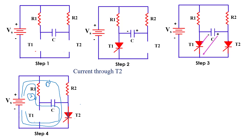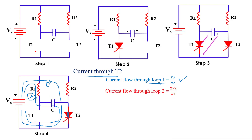Initially the total current through T2 is: from loop 1, Vs/R2; plus from loop 2, 2Vs/R1 — because the supply voltage Vs and the capacitor (already charged to Vs) are in series, giving a total voltage of Vs + Vs = 2Vs. So the total initial current through T2 is Vs/R2 + 2Vs/R1.